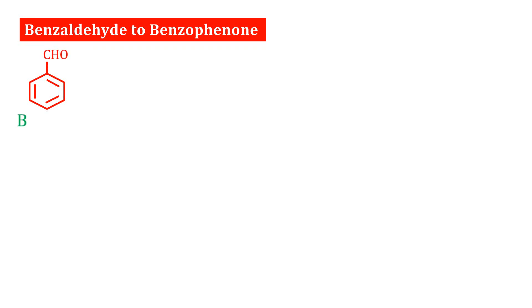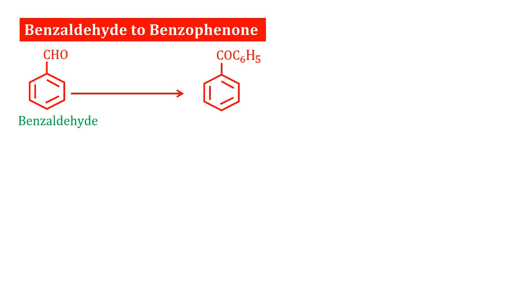Benzaldehyde to Benzophenone. This is Benzaldehyde. This is Benzophenone. Benzaldehyde has a CHO group, that is an aldehyde group. Benzophenone has a COC6H5 group, that is an aromatic ketone.